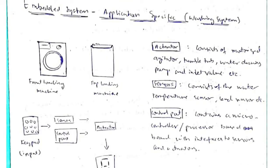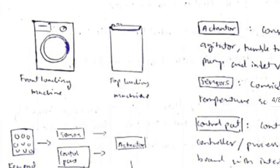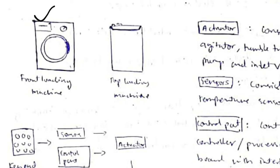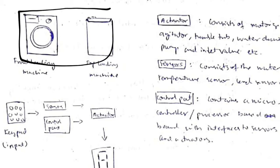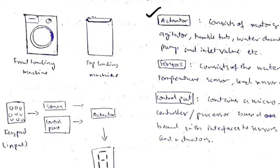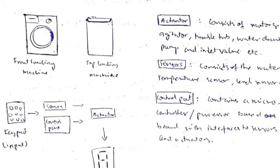Embedded systems are of two types: application specific and domain specific. For application specific, the example is a washing machine. There are two types — front load and top load — and both have roughly three categories of components. The first category is actuators: the motorized agitator, tumble tub, and water inlet valve — the main mechanical components.